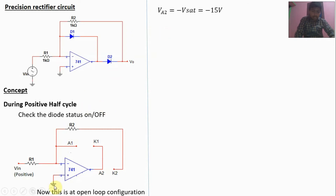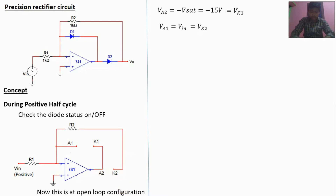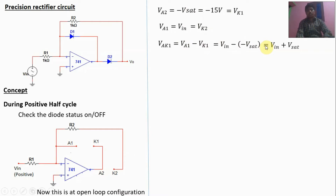V-A2 is minus 15 volts. K1 is directly connected at A2, so V-K1 is equal to V-A2, which is minus 15 volts. This is an open terminal, so there is no current flow through R2, and no voltage drop across R2. Therefore V-A1 equals V-K2, which equals V-in. The voltage drop across diode D1 is V-AK1 = V-A1 minus V-K1 = V-in minus (minus 15V) = V-in plus 15V. Since V-in is positive and 15V is positive, V-AK1 is always greater than 0.7V, so diode D1 is on.